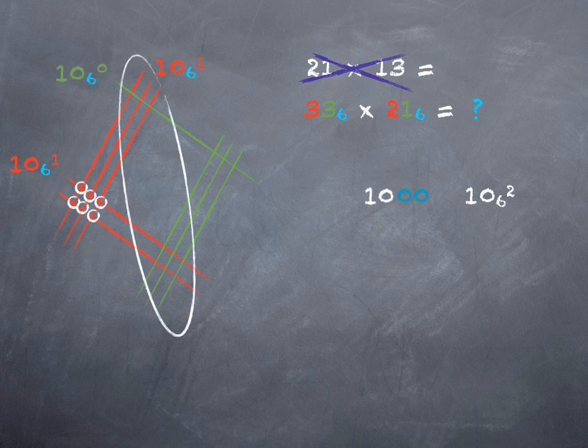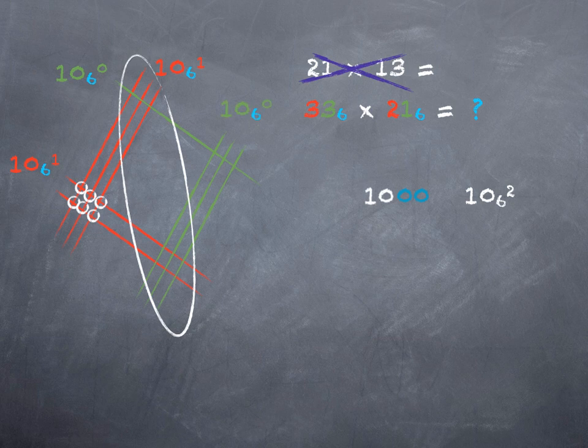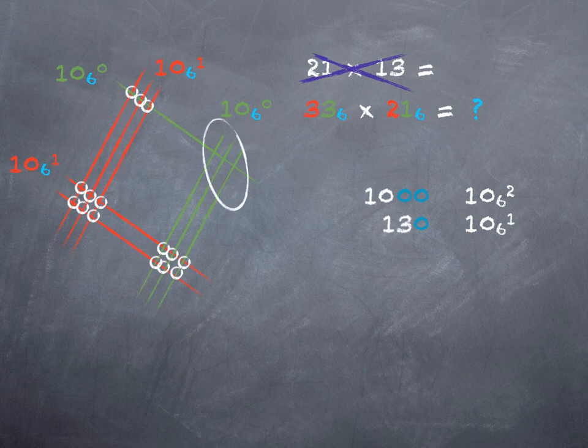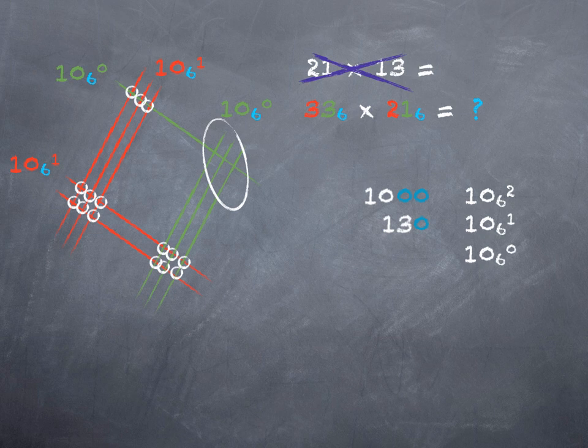My middle intersection, now I'm bringing the ones place into play. So this is going to leave me with one trailing zero, or 10 to the first in base 6. And I count those again, remembering that I have to roll over at 5. So I have 1, 2, 3, 4, 5, 1,0, 1,1, 1,2, 1,3. So I have 1,3 groups of tens.